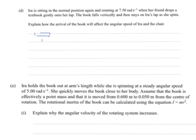When the book comes down and hits the person on the chair, the book makes contact here. There'll be friction between the two. In a typical system, you get a bit of energy loss as heat, because there'll be sliding friction.